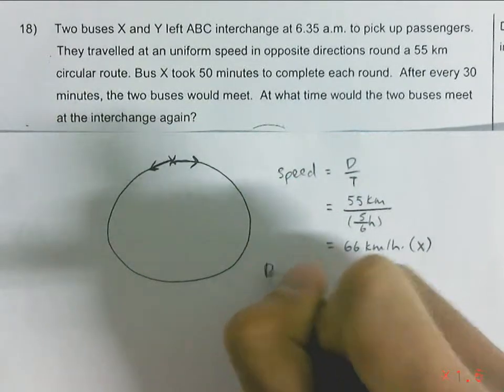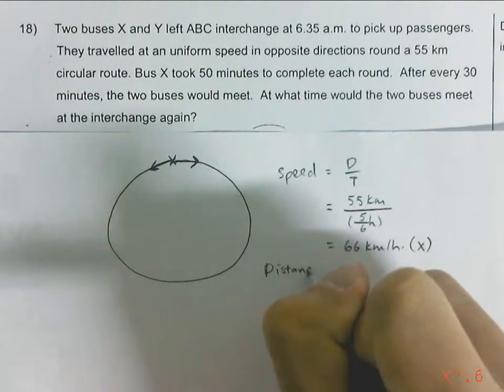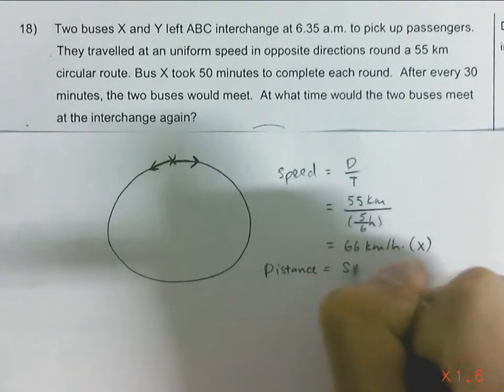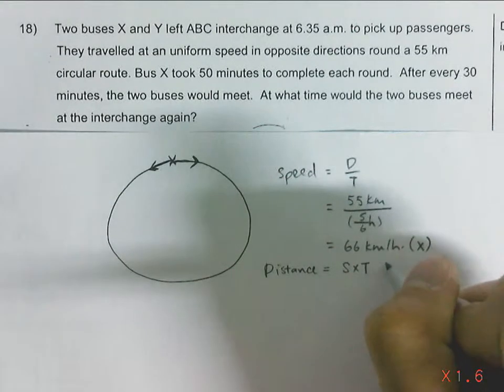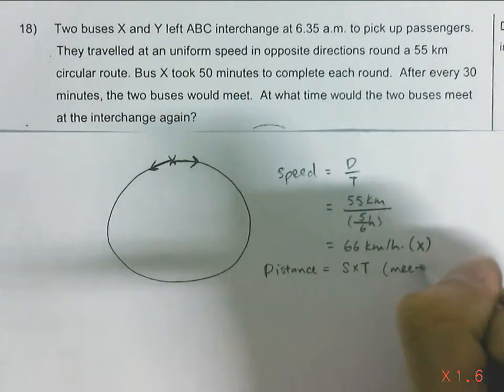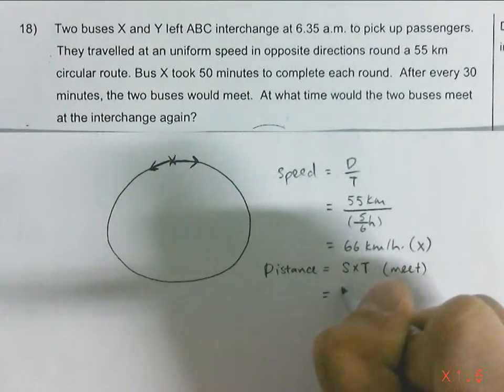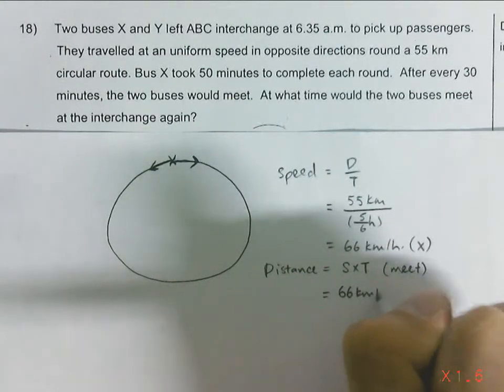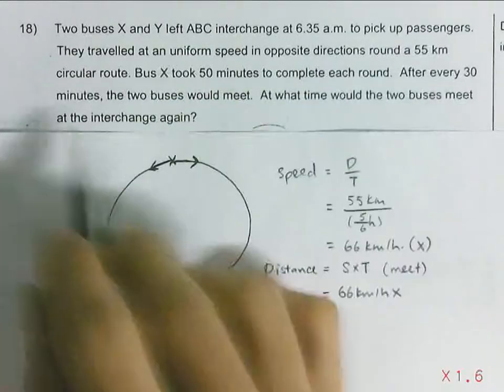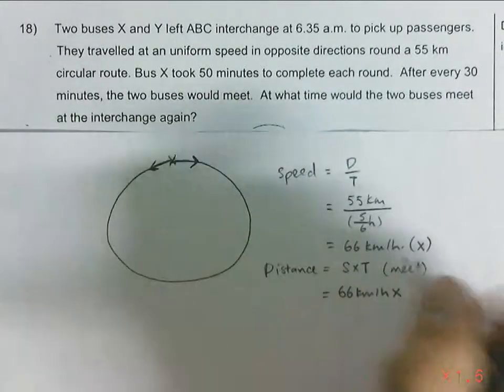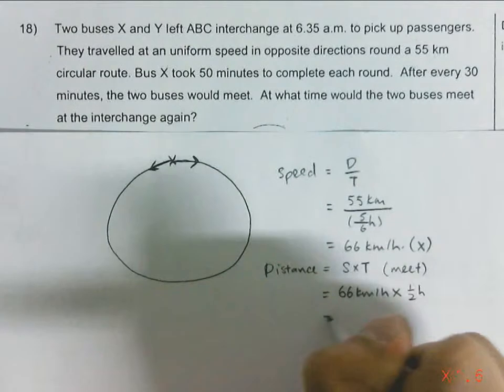So distance as speed times time. So this will be towards their meeting point. For Bus X, you will have traveled 66km per hour times 30 minutes, which is half an hour. So 33km.